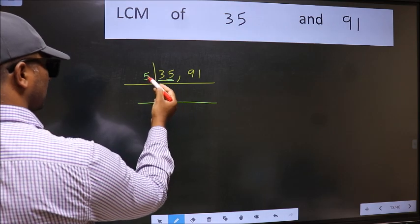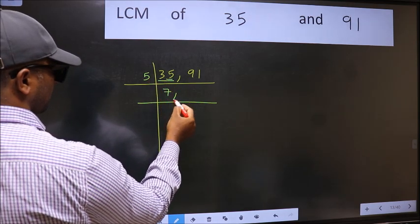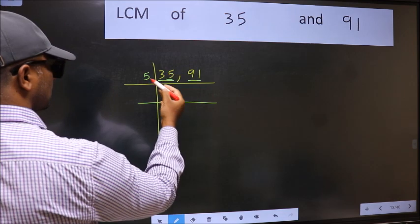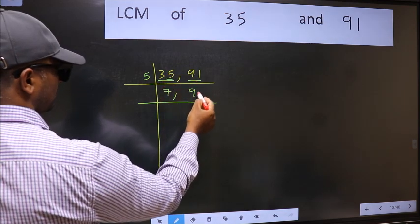When do we get 35 in the 5 table? 5 times 7 is 35. The other number 91 is not divisible by 5, so you write it down as it is.